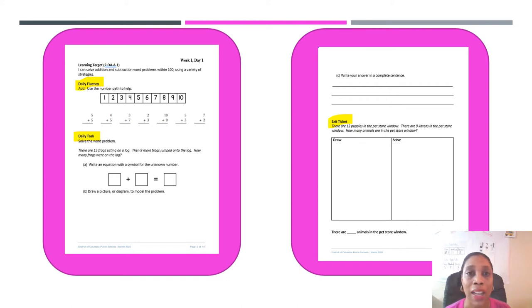Next, we have what we call our daily task. That's the new concept or previously learned concept that we're going to be reviewing in this packet. Third, we have the exit ticket. The exit ticket is just a way to practice what you have been taught.